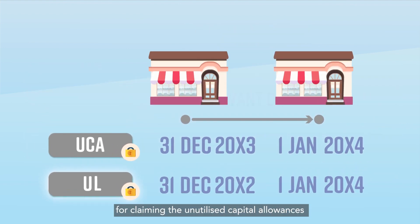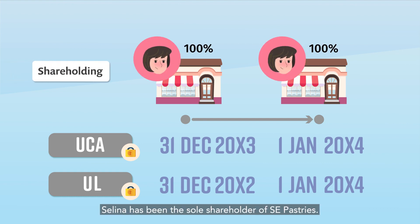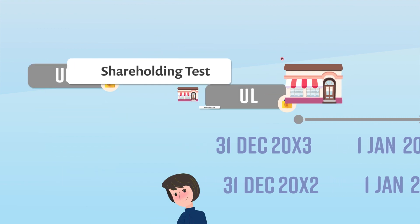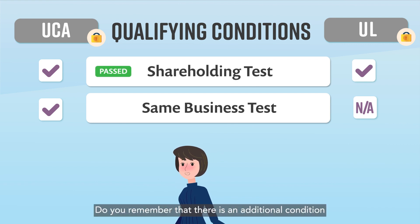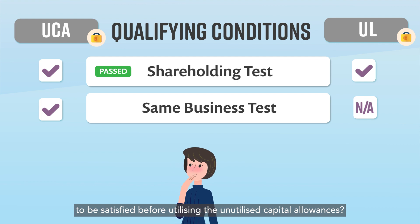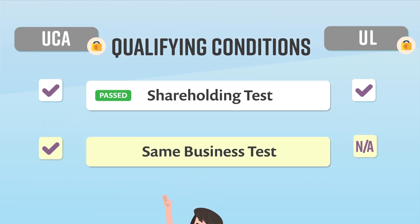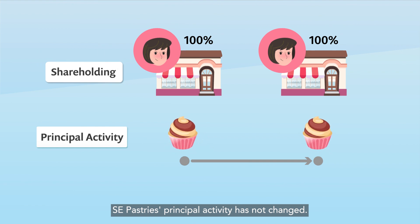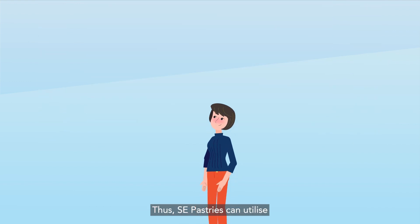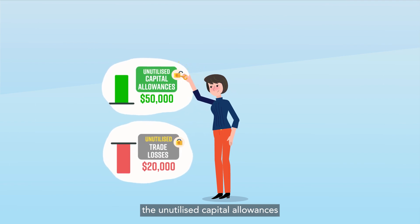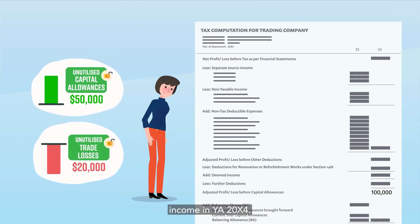As at the relevant dates for claiming the unutilised capital allowances and unutilised trade losses, Selina has been the sole shareholder of SE Pastries. Thus, the shareholding test has been fulfilled. There is also an additional condition to be satisfied before utilising the unutilised capital allowances — that would be the same business test. SE Pastries' principal activity has not changed, hence the same business test is satisfied. Thus, SE Pastries can utilise the unutilised capital allowances and unutilised trade losses to set off against the taxable income in YA20X4.